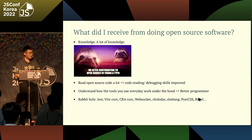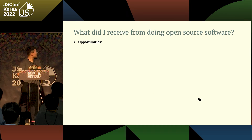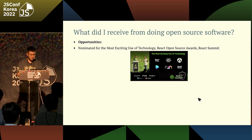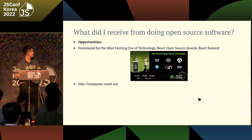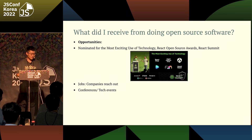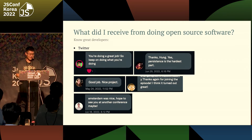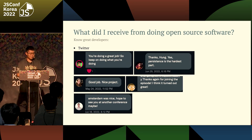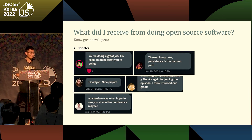I also learned a lot about how modern bundlers work and how they process CSS. The next reward is opportunity. In just two months of open source work, my project got nominated for 'Most Exciting Use of Technology.' Companies reached out with job offers. I got chances to join conferences and events like JSConf. I even got to meet and become friends with creators of libraries I admire — like MSW Mock Service Worker and React Hook Form.